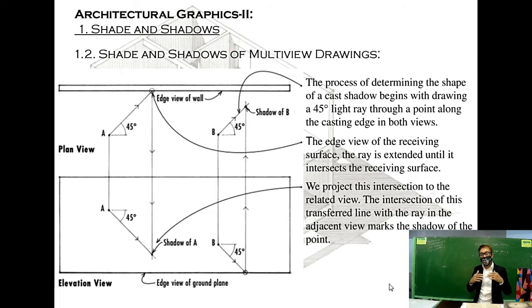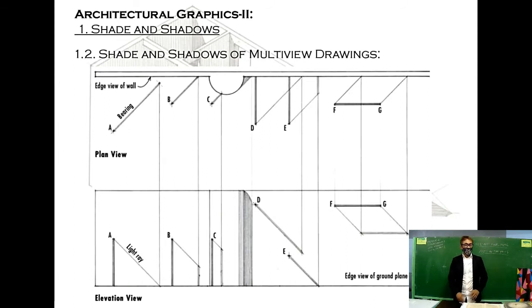The process of determining the shape of the cast shadow begins with drawing a 45 degrees light ray through a point along the casting edge in both views. The edge view of the receiving surface: the ray is extended until it intersects the receiving surface. We project this intersection to the related view. The intersection of this transferred line with the ray in the adjacent view marks the shadow of the point.